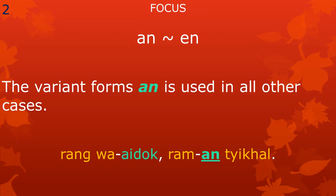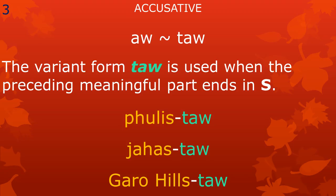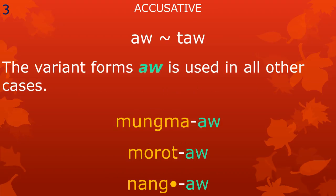The accusative meaningful part has two variant forms: au and tau. The variant form tau is used when the preceding meaningful part ends in the letter sa. The variant form au is used in all other cases, as for example mungmau, morottao, and nangau.